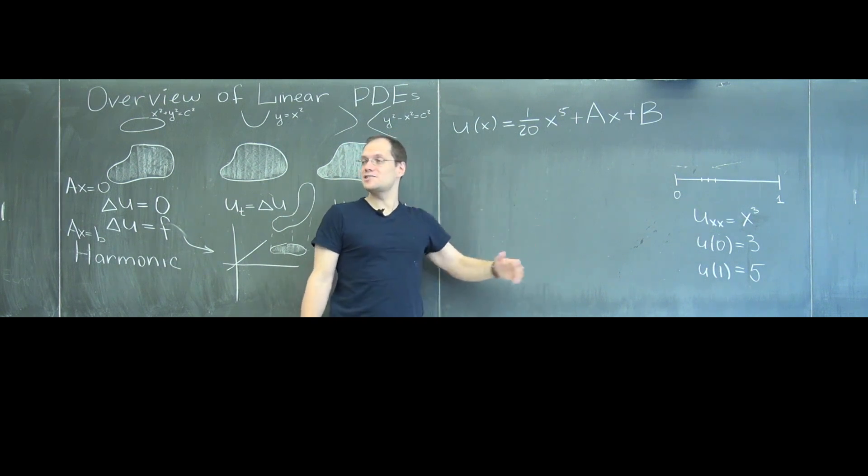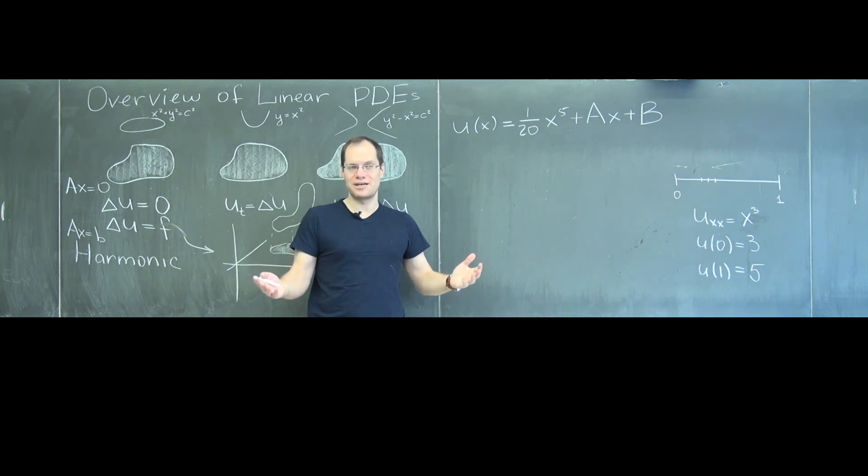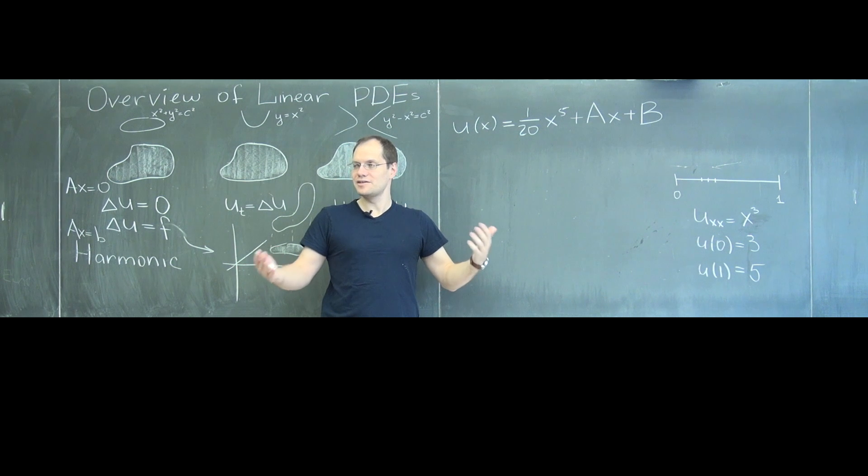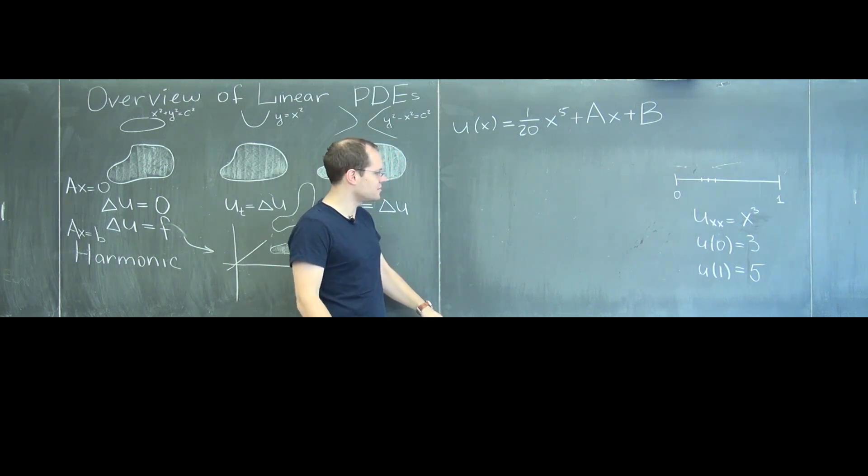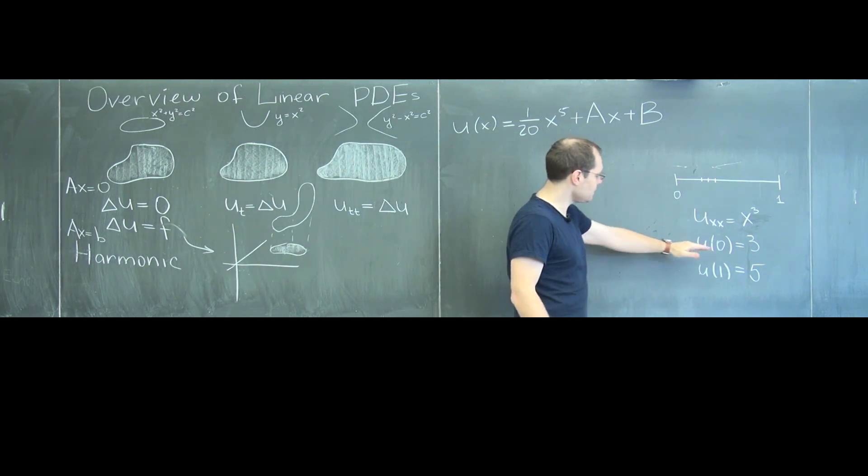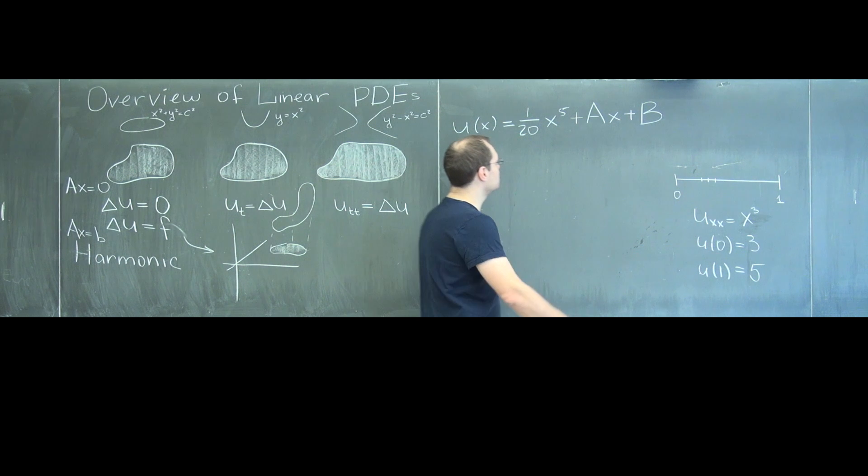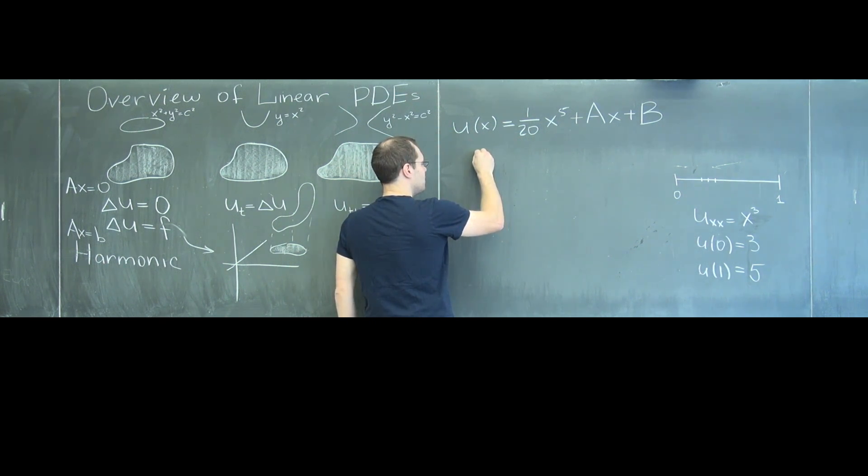Okay, so now we have to satisfy the initial condition. Once again, just the right number, everything works. All that's left is just a little bit of arithmetic. We have, at value zero, the function equals three, so b equals three.